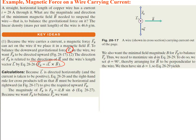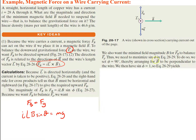The magnitude of F_B is given by ILB sine φ. Because we want F_B to balance F_G, we set F_B equal to Mg, so ILB sine φ equals Mg. We also want the minimal field magnitude B. To minimize B, we need to maximize sine φ, so we set φ equal to 90 degrees, arranging B to be perpendicular to the wire.